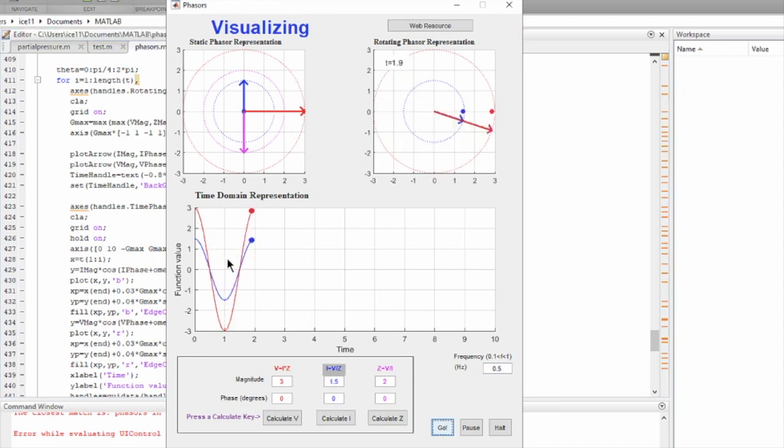So you can see right there that the voltage and current peaks appear at the same time, and the voltage and current phasors are in line with each other. They are rotating in a circle with a certain angular frequency. Okay, so I'm going to pause this.